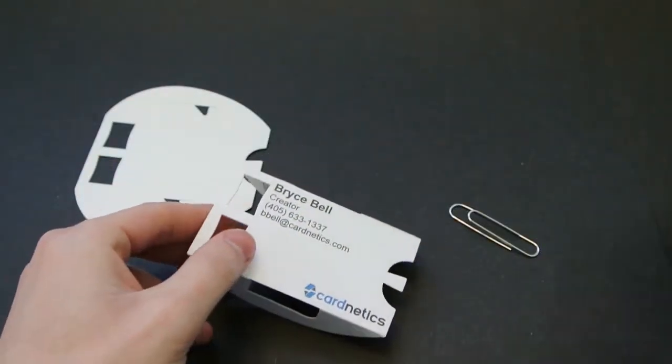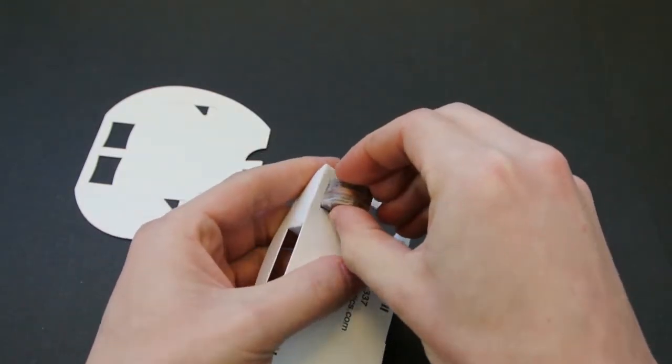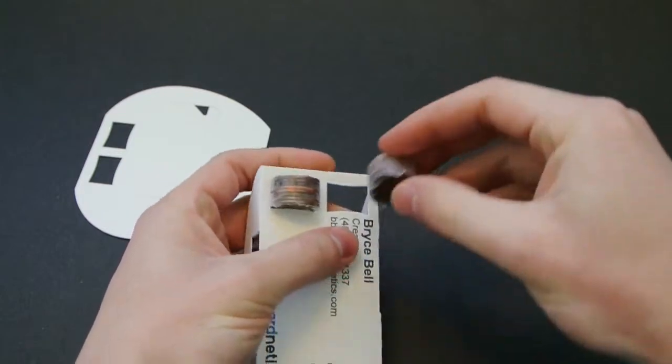The counterweights are 16 pennies, which are divided into two stacks and wrapped in tape. Those are just inserted into the front of the card.